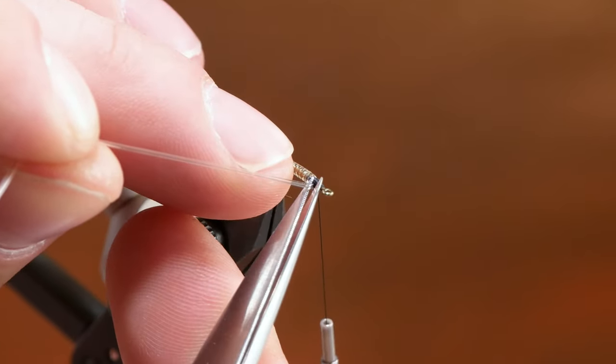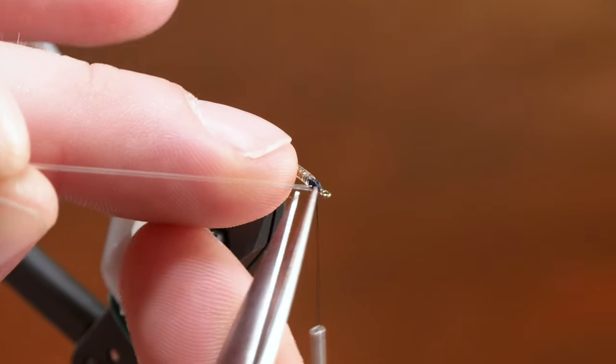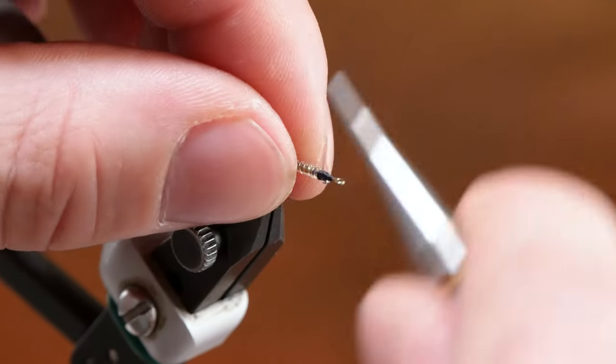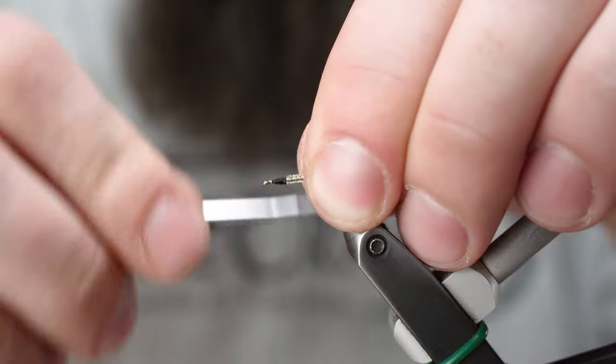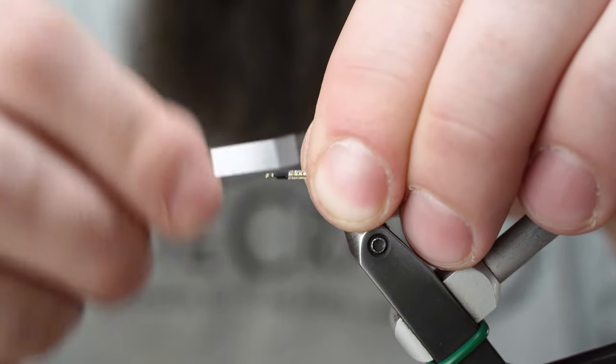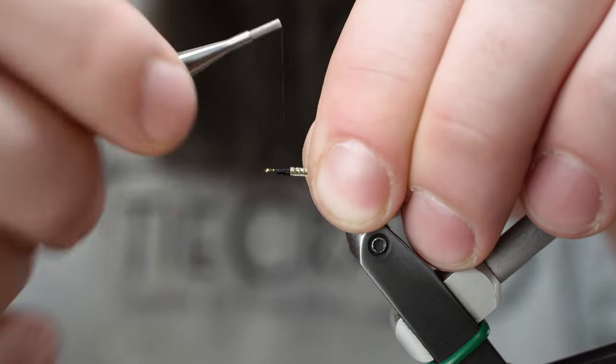And then when I'm trimming this out, I'm pulling pretty tight. I'm pushing on the hook with this finger and pulling tight. Just helps minimize a random bump here and there when you're creating the taper for this head.